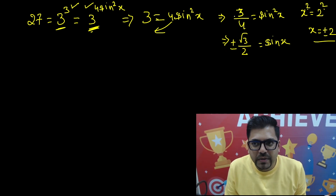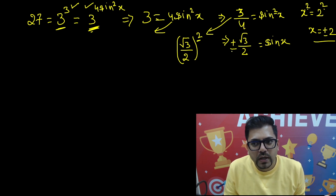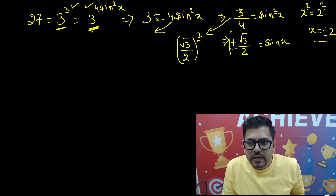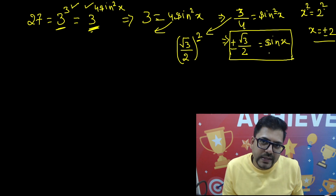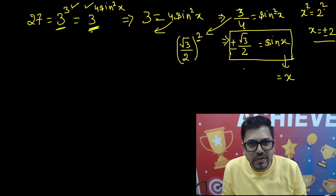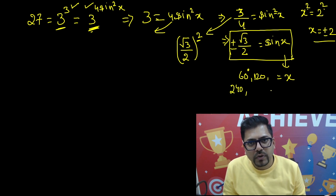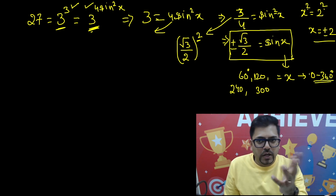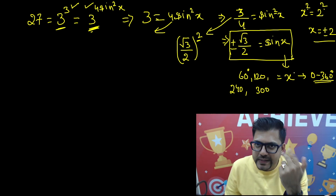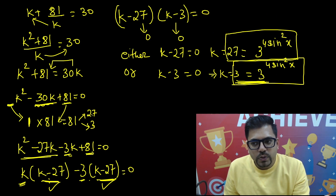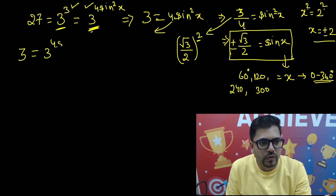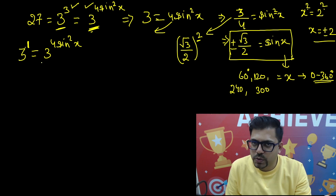So sin²x equals 3/4 can be written as (√3/2)². Removing the square with plus-minus gives sinx equals plus or minus √3 over 2. This gives x equals 60° and 120° for the positive case, and 240° and 300° for the negative case, all within the range 0° to 360°. For k equals 3: 3 raised to power 4sin²x equals 3 raised to power 1, so 4sin²x equals 1, meaning sin²x equals 1/4, which is (1/2)².